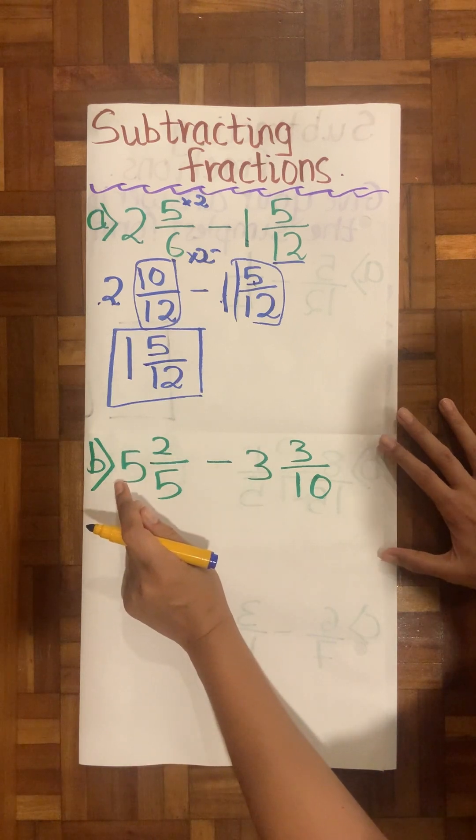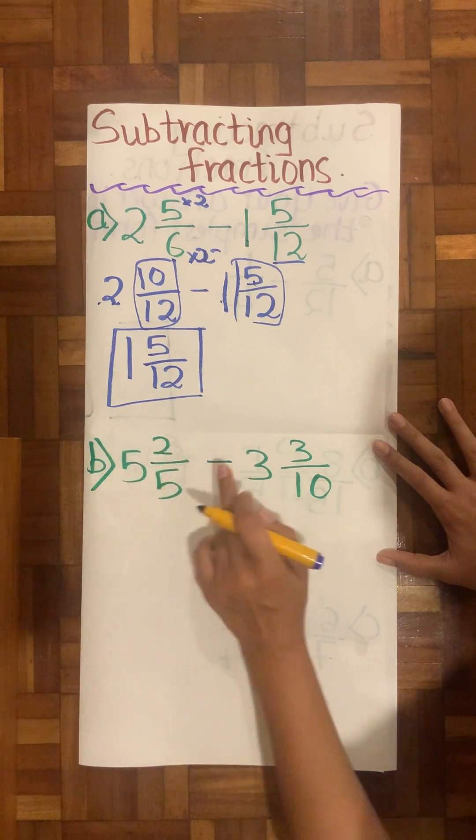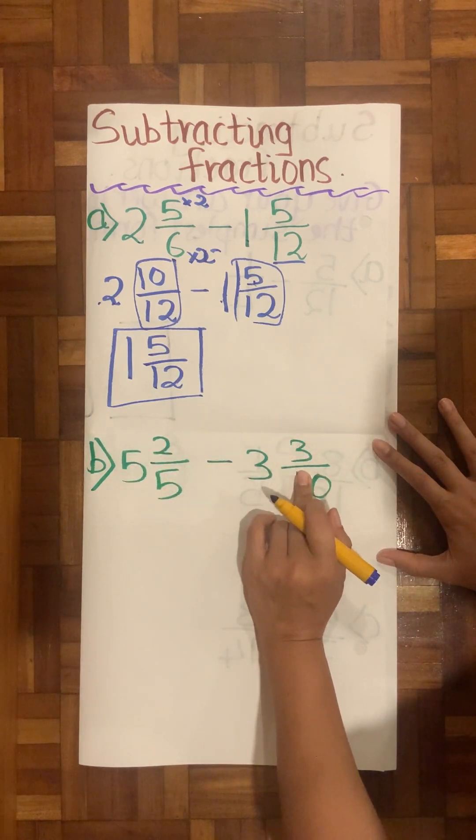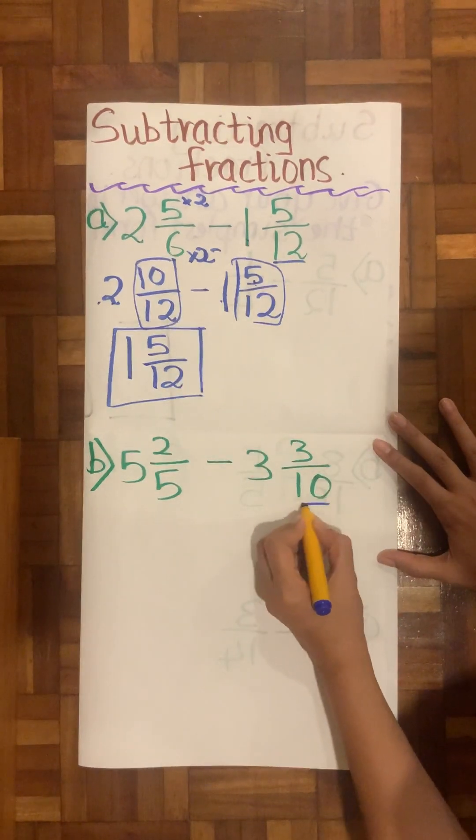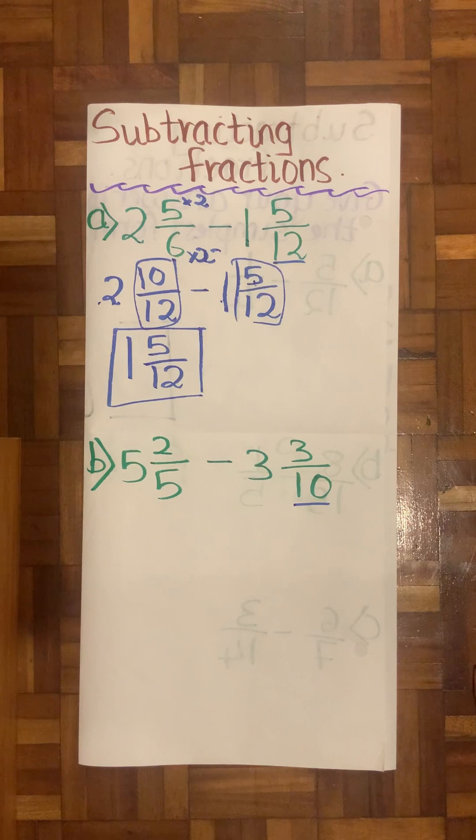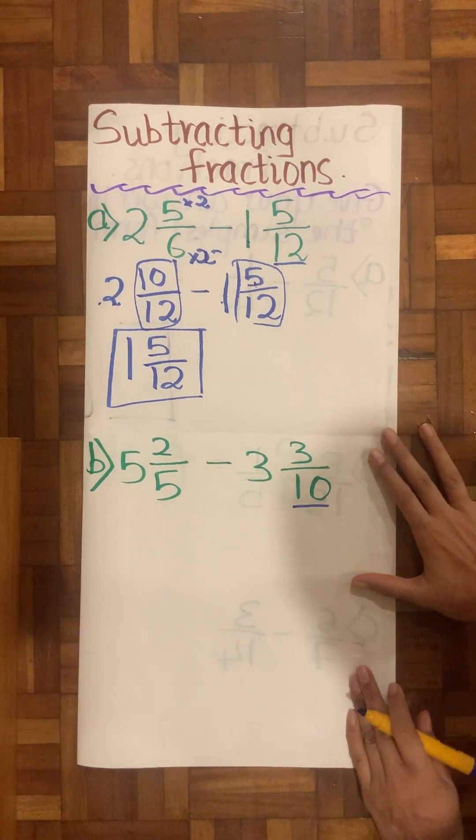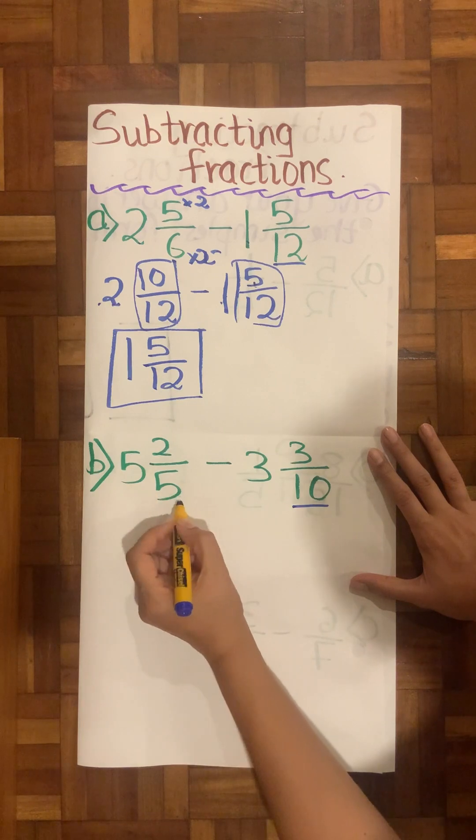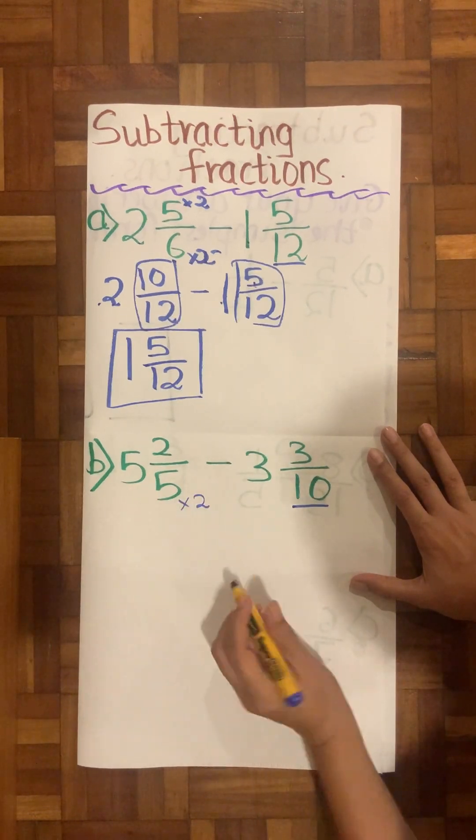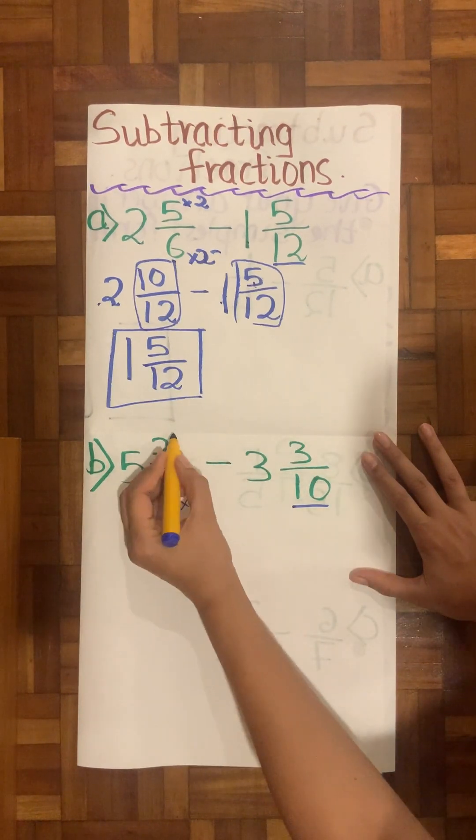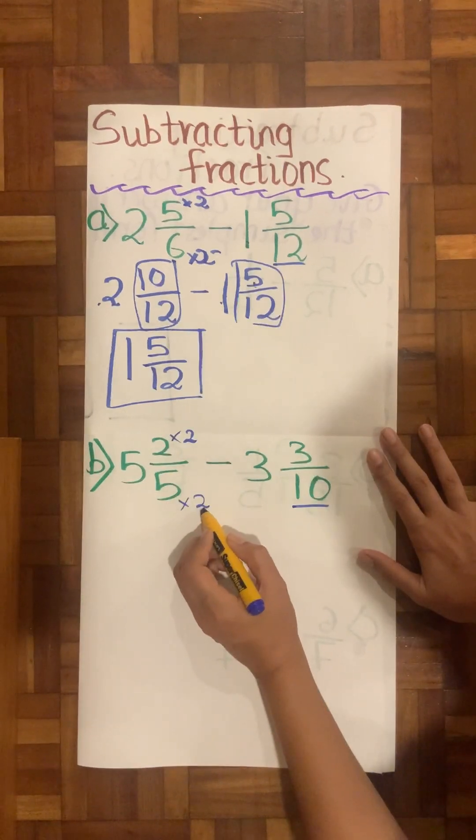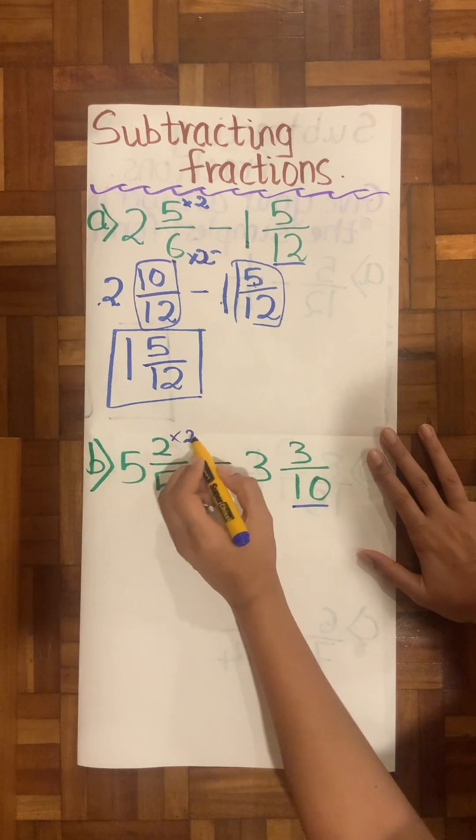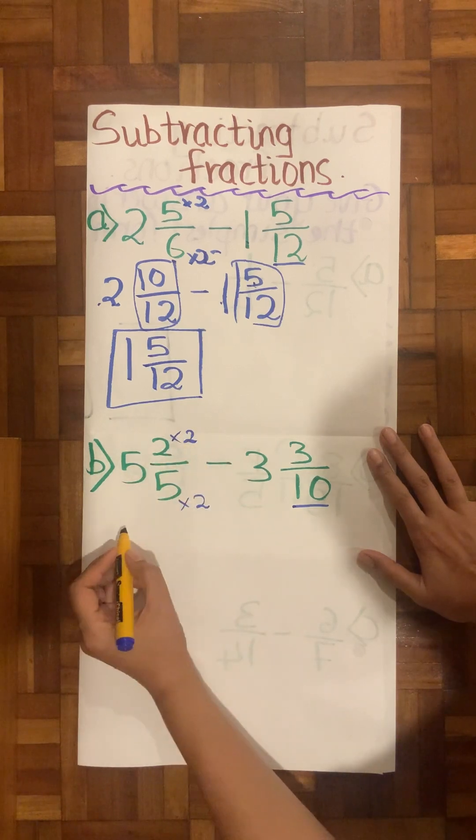Let's go to the next question now. The question says 5²⁄₅ minus 3³⁄₁₀. Again the same thing I will do here is note down my highest denominator. My highest denominator that I see is 10. Therefore 5 times 2 is 10, and 2 times 2 is going to be 4.